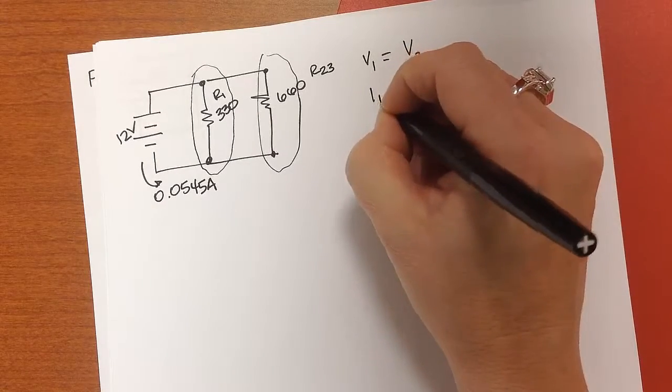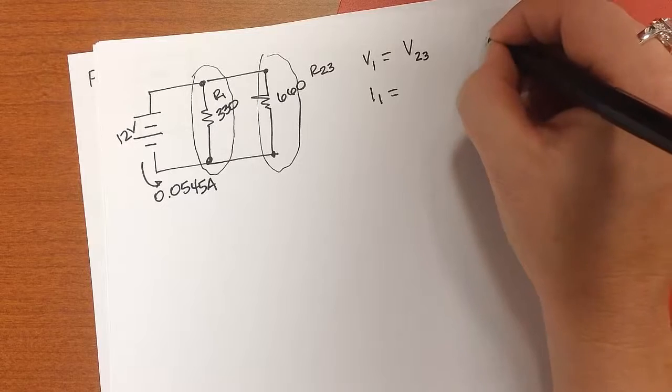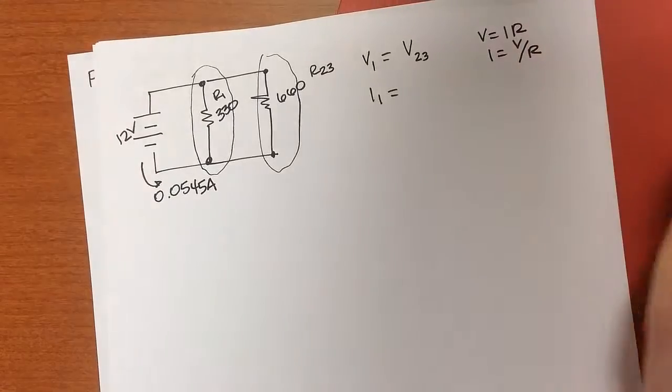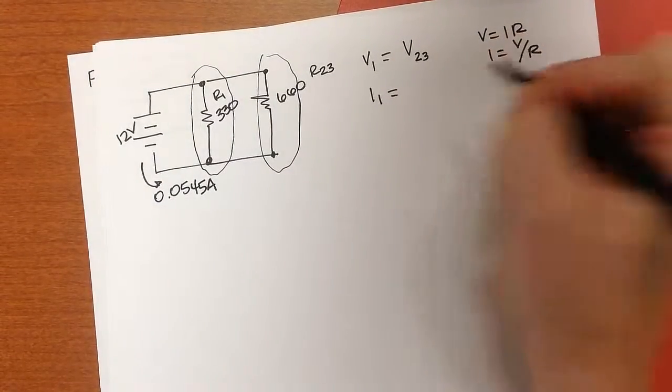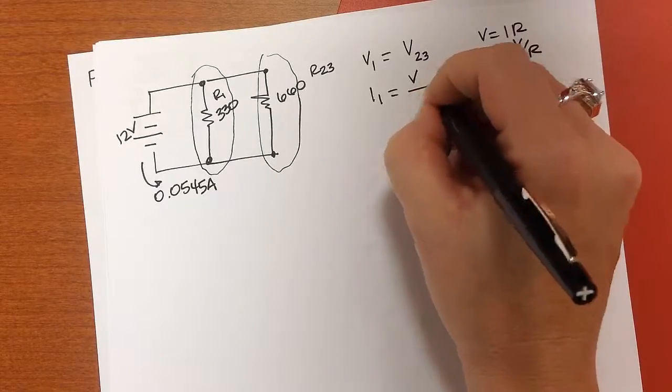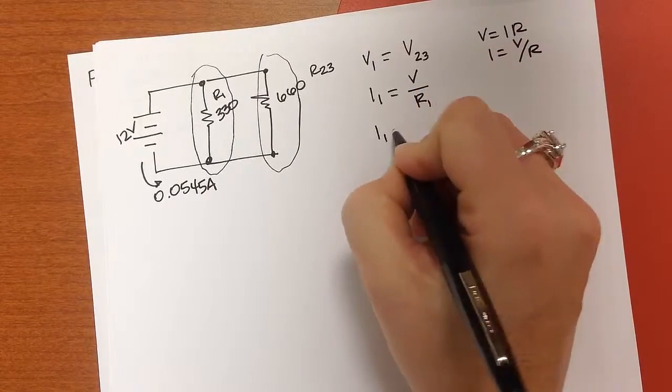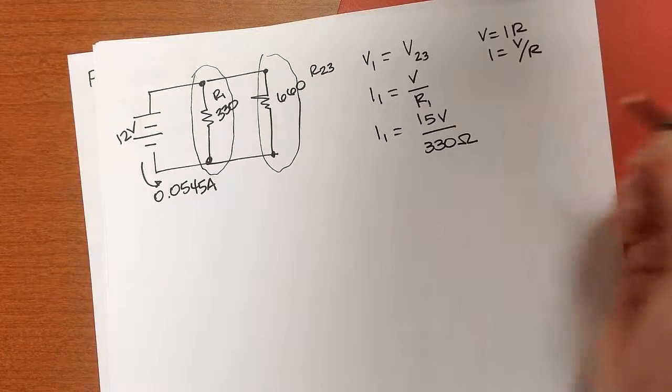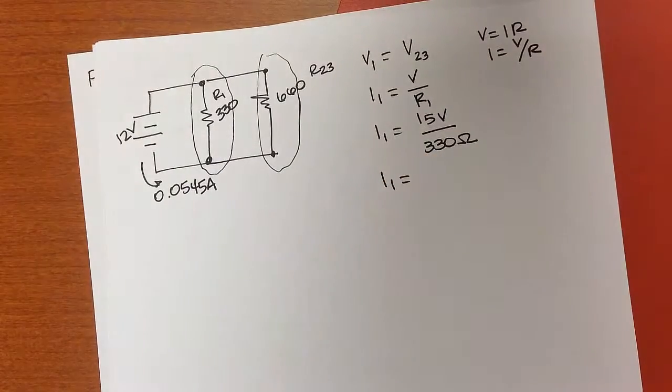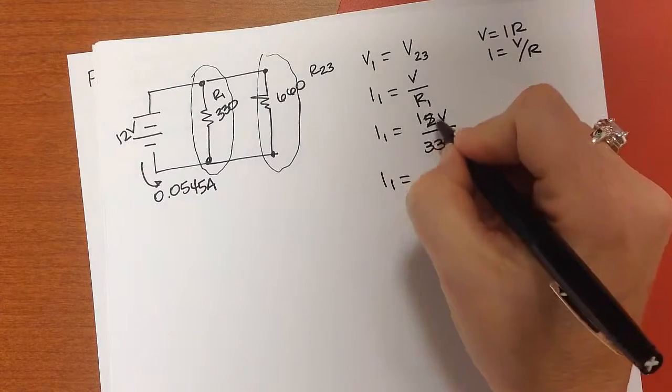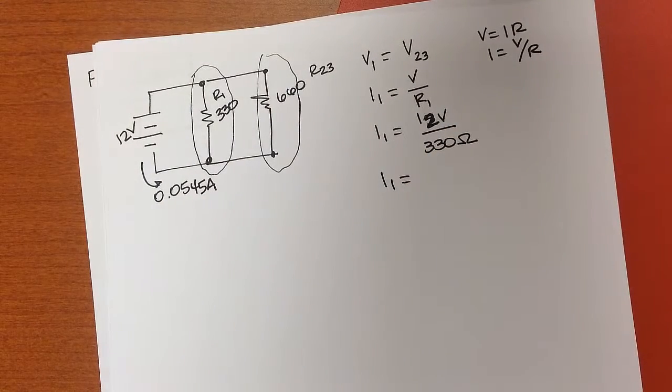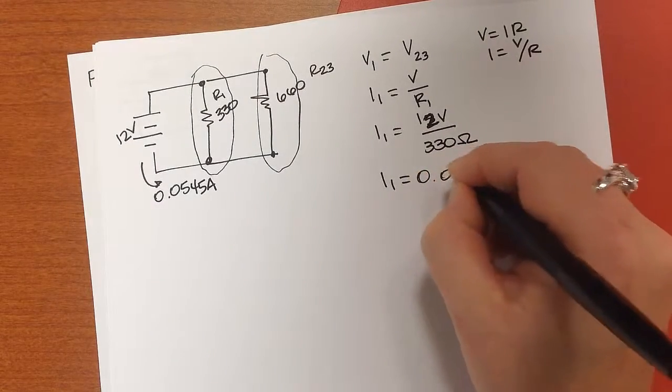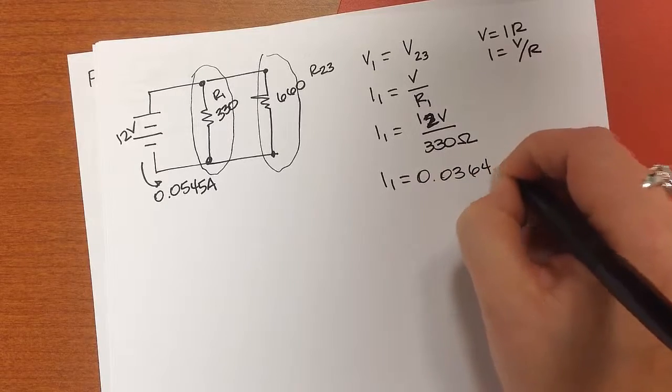And we can do I1 is equal to, remember that V equals IR, so I equals V over R. So I1 is equal to 12 volts divided by 330 ohms, and I1 is equal to 0.0364 amps.